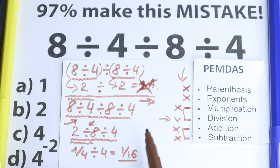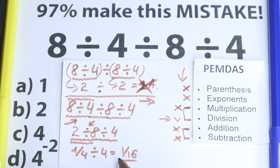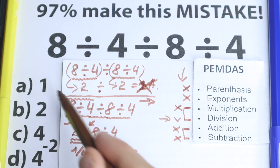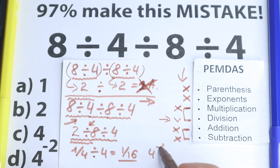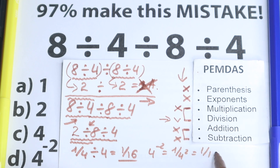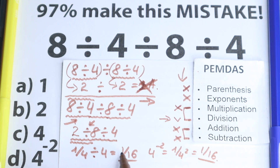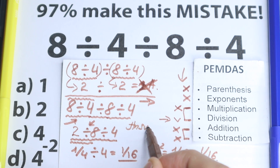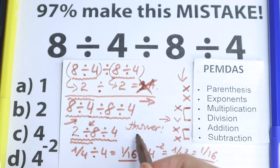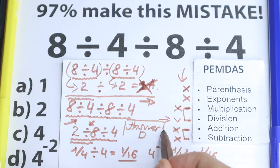I hope you understand my thoughts about this solution. Multiplication and division come before addition and subtraction — this is the key moment. So the correct answer is 1 over 16. Option A is not the same, option B is not the same, option C is not the same. What about option D — 4 to the power of minus 2? Let's look: 4 to the power of minus 2 equals 1 over 4 squared, which equals 1 over 16. So option D is the correct answer.